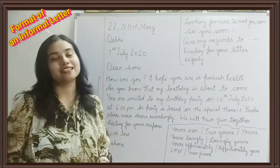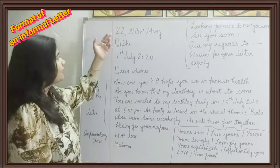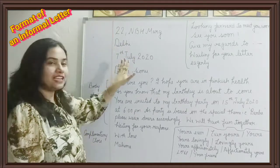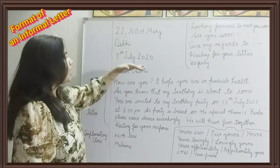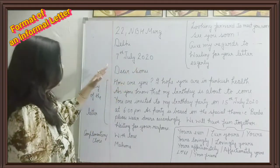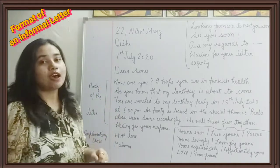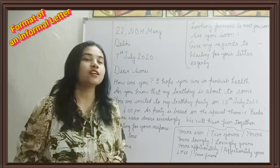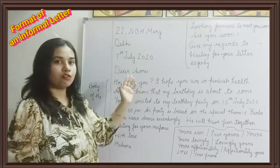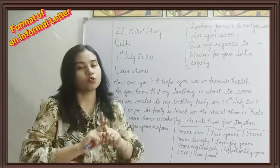I have written the complete letter so that you can understand it easily. First, sender's address, then leave one line and write the date, then leave one more line and write the salutation. Here is the body of the letter. One important thing: there is no need to put a comma anywhere — not after the address, date, salutation, or complimentary close. No unnecessary commas anywhere.